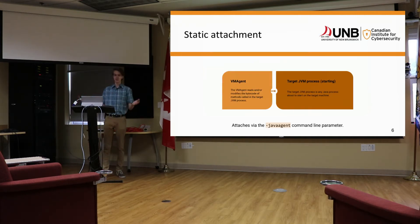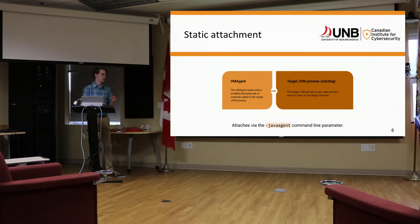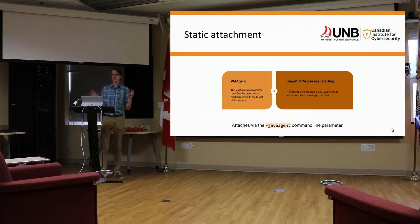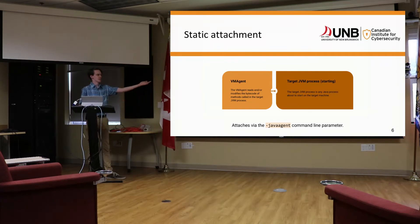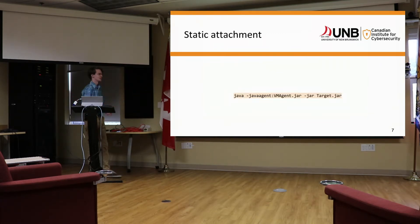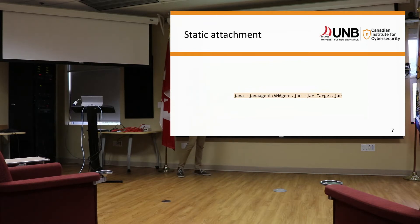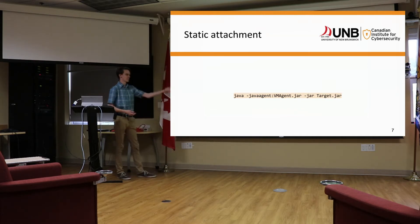For static attachment, we have our agent and our JVM process, and we attach via the Java agent command line parameter. All we have to write is our agent — it can handle everything except for the attachment, which we do via the command line parameter. So for example, if we're running target.jar, normally we just do java -jar target.jar, but if we want to attach an agent we do java -javaagent: followed by our agent path, then target.jar.